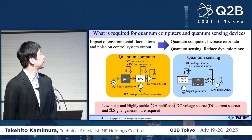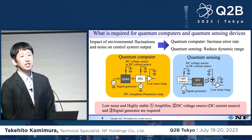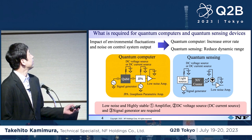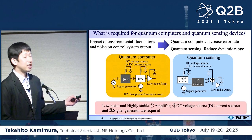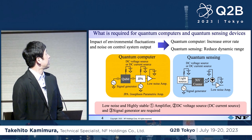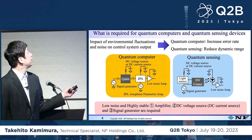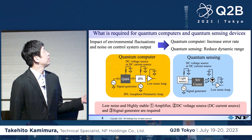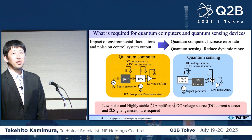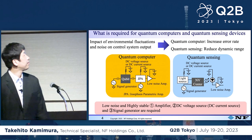Now I'd like to talk about what is required for quantum computers and quantum sensing devices. These are rough schematics of the quantum computer and quantum sensing. What they have in common are the low noise amp to detect signals, DC voltage source, DC current source, and signal generators. The noise output from the control systems will increase the error rate of the quantum computer and also reduce the dynamic range of quantum sensing. Therefore, this controlling system needs to have low noise and highly stable performance.